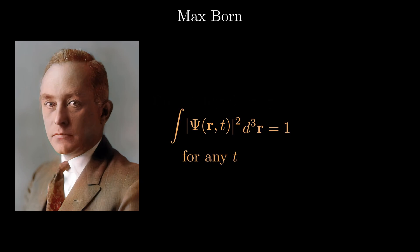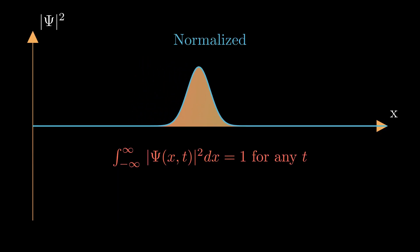Consequently, integrating this probability density across all space should yield a value of 1. This is called normalization.